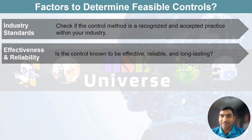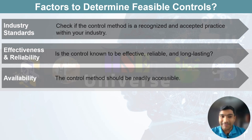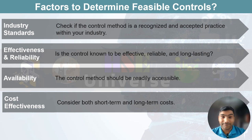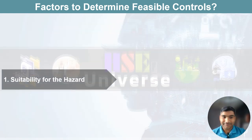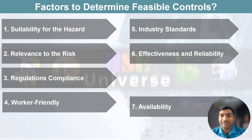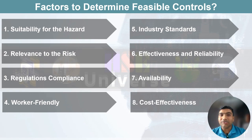Sixth, effectiveness and reliability — is the control known to be effective, reliable and long-lasting? You want a solution that can be counted on to protect workers consistently. Seventh, availability — the control method being proposed should be readily accessible and possible to implement; it is not practical if it is challenging to obtain. Eighth, cost-effectiveness — consider both short-term and long-term costs; a control should not only protect workers but also be financially sustainable for your organization. By evaluating controls based on these factors, you can make informed decisions to ensure the safety and well-being of your workforce.